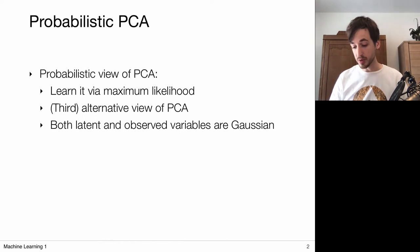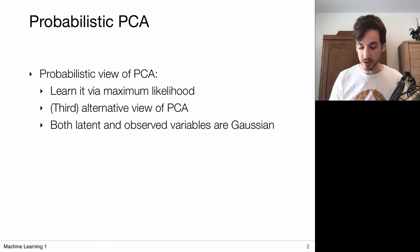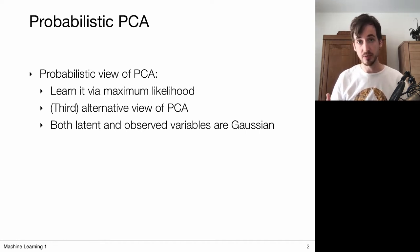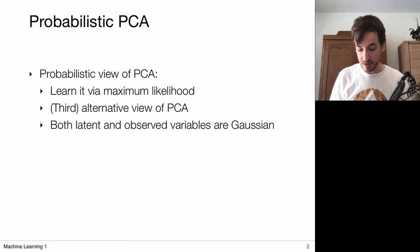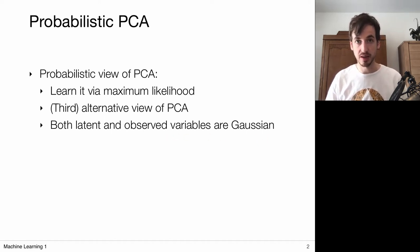Probabilistic models have some advantages over discriminative models because they allow generating new data points once we have a full description of our distribution, and they allow us to deal with uncertainties. We define a probabilistic latent variable model and optimize it via maximum likelihood, which gives us a third alternative view on principal component analysis. In our modeling choices, we work exclusively with Gaussian variables because that keeps things simple.